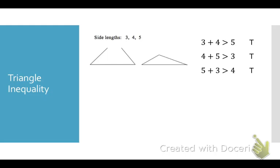But if I had a triangle with side lengths of 3, 4, and 5, if I push 3 and 4 together they would meet, because all three inequality statements are true. So the sum of any two sides of a triangle must be greater than the third side.